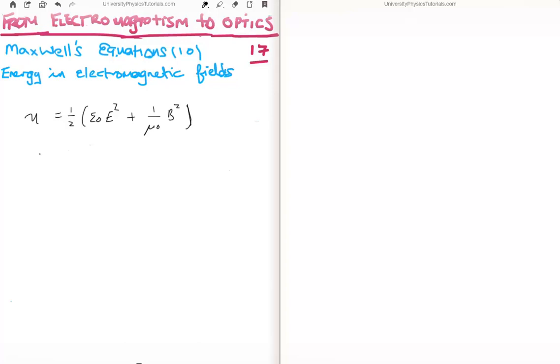So obviously in order to get the total energy in the electric field we need to integrate this. So we integrate it as follows, and that will give us the total energy.